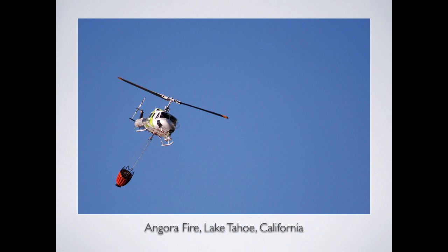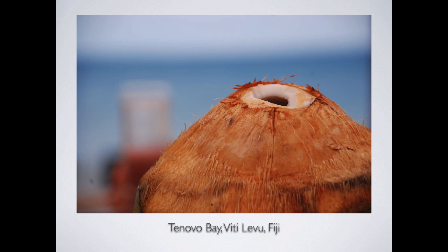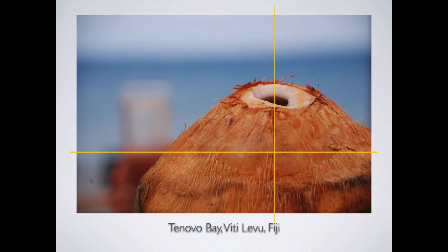This example could be a strong diagonal, but the helicopter falls roughly a third of the way over. Another example with good depth of field — everything blurred out behind — and again it falls on the rule of thirds, in the lower right quadrant. Here's the top-of-the-mountain example: you've just hiked Machu Picchu on the Inca Trail. Instead of putting yourself in the dead center, the two of us are roughly a third of the way over and we get a whole bunch of context about the mountains — a much stronger composition.